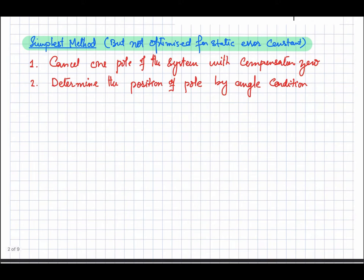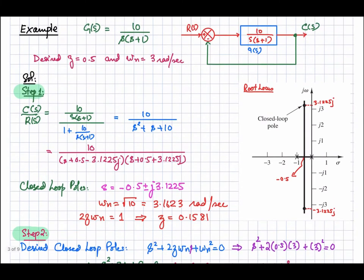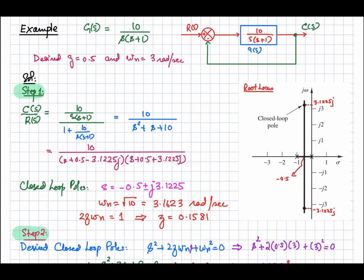The simplified method is not optimized because it may not give a high value of the static error constant. Now let's look at the design of the lead compensator with an example. The system has feedforward transfer function G(s) = 10 / [s(s+1)] in a unity feedback system where H(s) = 1. We want to design a compensator D(s) such that the damping ratio ζ = 0.5 and natural frequency ωn = 3 rad/s.